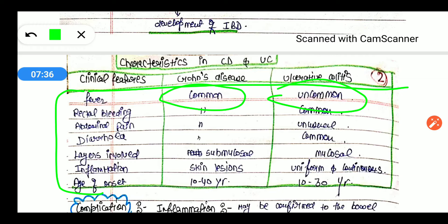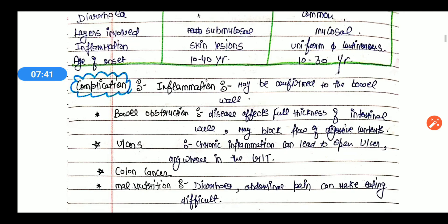Next is its complications. If you don't treat the IBD, then what complications can it cause? First is inflammation - we can see it is an inflammatory condition, so inflammation can occur but it may be confined to the bowel wall. The first point is inflammation, second is bowel obstruction. The disease affects full thickness of the intestinal wall and blocks digestive content.